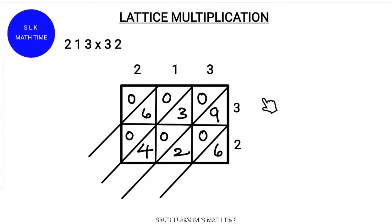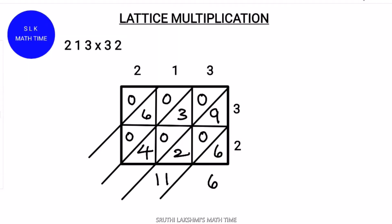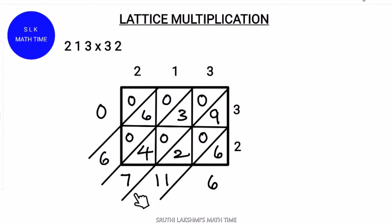Next, add them up diagonally. So this is 6. Now, 9 plus 2 is 11. Next, 3 plus 4 is 7, 6, then 0 as it is. Now, 11 is a 2-digit number, so we carry this 1 over here.